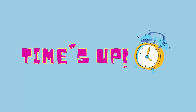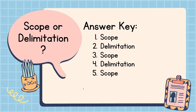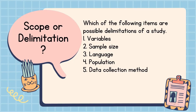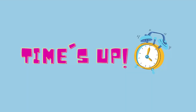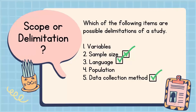Time is up! Let's check your answers. Did you get a perfect score? Let's go to the next part. Which of the following items are possible delimitations of a study? Number one: variables. Number two: sample size. Number three: language. Number four: population. Number five: data collection method. You have 15 seconds to answer. Time is up — let us now check your work. The answers are sample size, language, and data collection method. Did you get all items correct? Very good! If not, don't worry — you still have a chance to clarify the concepts.